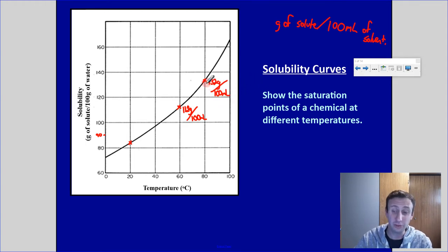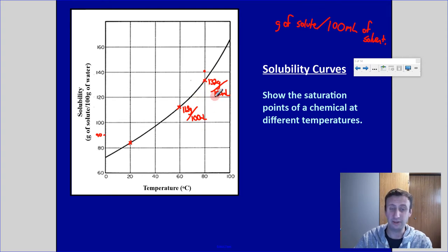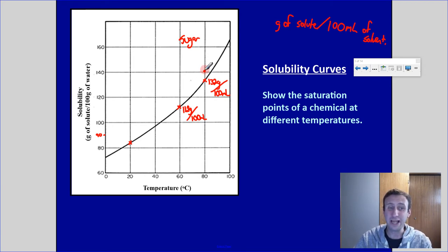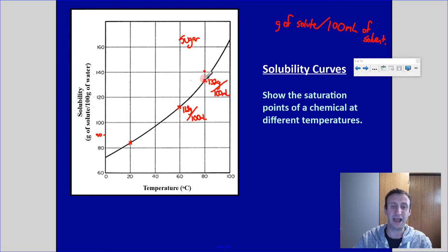So 132 grams would be how much solute I can dissolve at 80 degrees Celsius per 100 mils of water. Now, if I add more than 132 grams — let's say 140 grams of sugar to 100 mils of water at 80 degrees Celsius — not all the sugar would dissolve. I would have about 8 grams of sugar left at the bottom that simply would not dissolve. 132 grams is the max amount that would dissolve at 80 degrees Celsius.